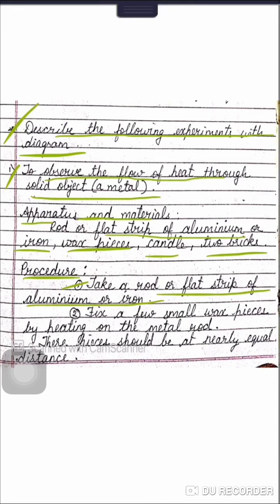Conclusion: heat travels in metal through conduction. Heat flows from the hotter end of the object to the colder end.